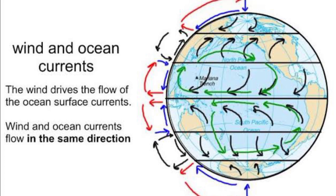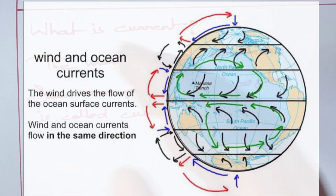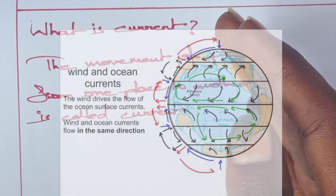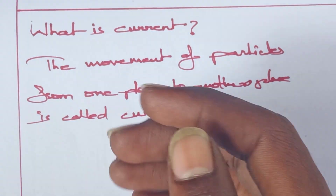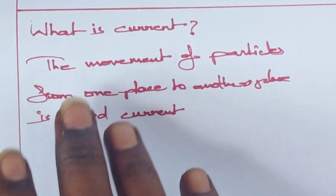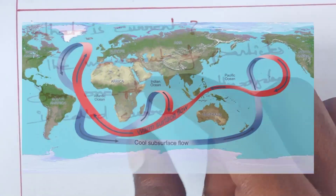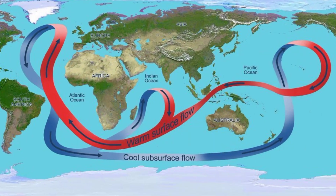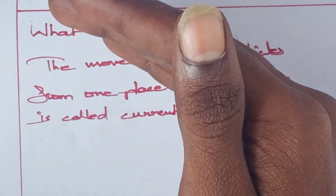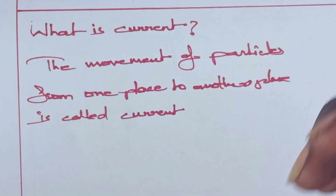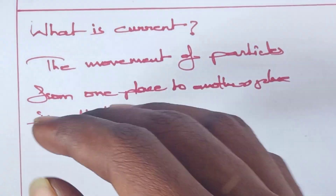We have an example of atoms. When atoms are in one place and move to another place at the same level, we can figure it out with the concept of wind current. We have studied oceans in the ninth class.